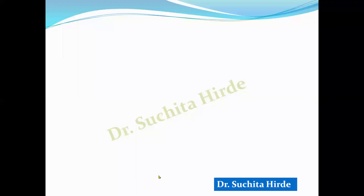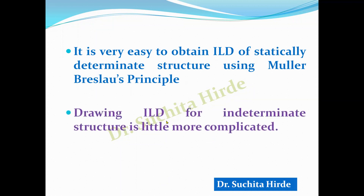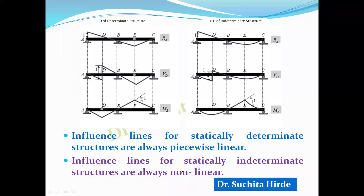This is the second difference. Since equilibrium conditions alone are sufficient to draw the ILD for a determinate structure, it is very easy to obtain the ILD of a statically determinate structure using the Müller-Breslau principle. The Müller-Breslau principle can also be applied to indeterminate structures, but drawing the ILD for an indeterminate structure is a little more complicated. Furthermore, influence line diagrams for statically determinate structures are always piecewise linear — this piece is linear, this is linear, this is linear — whereas influence lines for statically indeterminate structures are always non-linear.